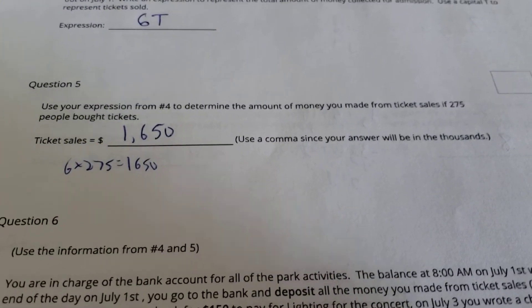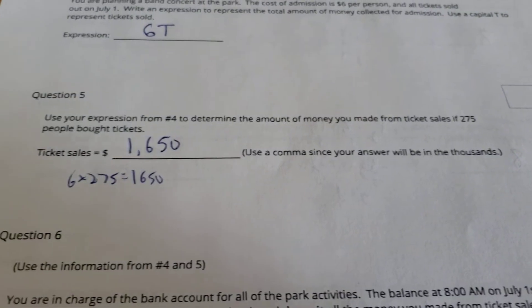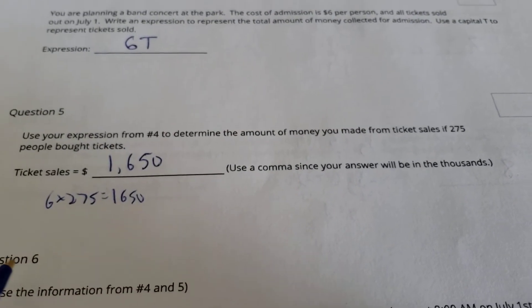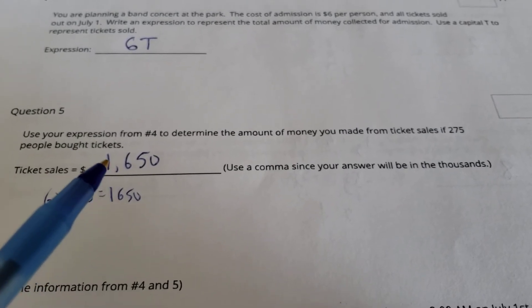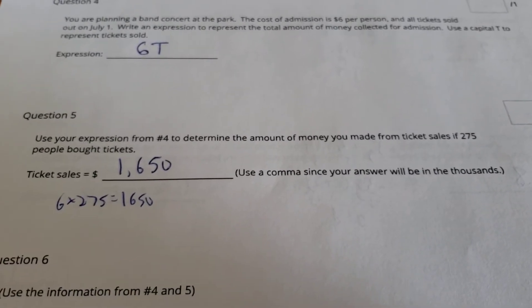Number 5, using that expression from number 4, determine the amount of money you made if you sold 275 tickets. Well, 6 times the amount of tickets, 6 times 275, gives you 1,650. Make sure you do put your comma in there for your answer.